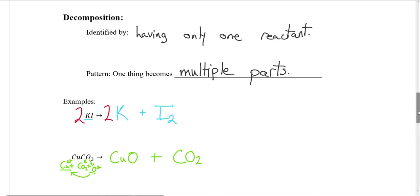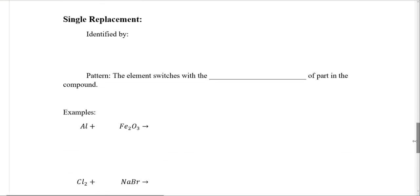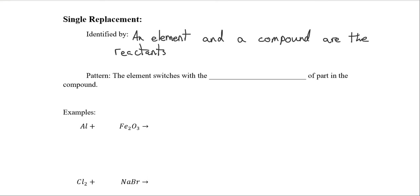Let's move on to single replacements. A single replacement is identified by having an element and a compound as your reactants. So what are single replacements going to be about? The element is going to switch with the similar type of part in the compound. What do I mean by similar type? I mean metals will replace metals and non-metals will replace non-metals.